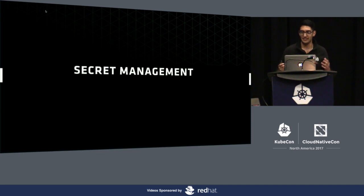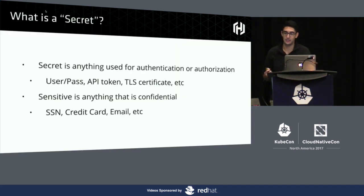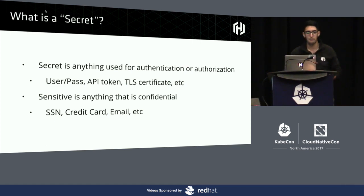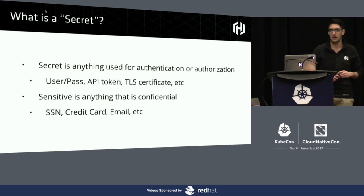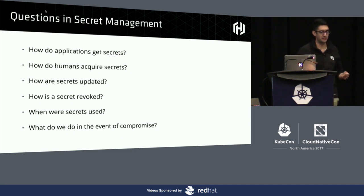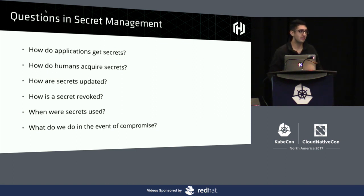What does this world really look like? It starts by understanding what a secret actually is. The way we like to think about it is it's any piece of information that you can use for authentication or authorization — something you can provide to another system that grants you access, proves your identity, or elevates your capability. Sensitive information is a different class: things we'd like to keep confidential, but that don't necessarily grant additional access. The open questions in secret management are: how do applications get secrets, how do human operators get secrets, how do we update them, what happens if we need to revoke access, how do we know who's used what, and what do we do in the event of a compromise?